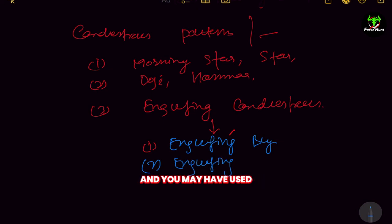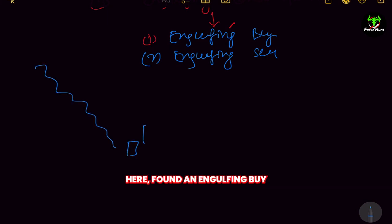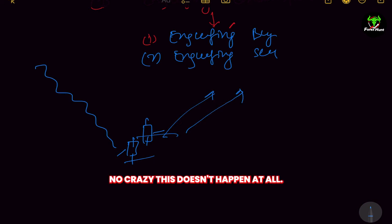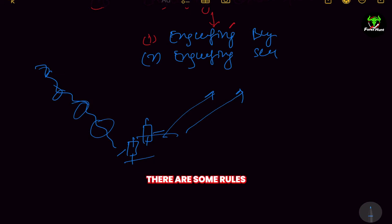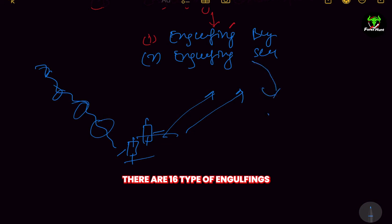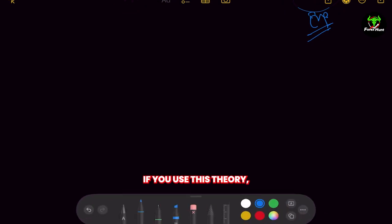You may have watched tutorials and tried them in the market — market falling, an engulfing buy forms with a sell candle followed by a buyer's candle, and you bought expecting it to go up. But this doesn't happen at all just anywhere on the chart. There are rules and regulations for checking engulfing buy and engulfing sell. There are 16 types of engulfings, from which you have to use four to five kinds. This will build your life, I promise.